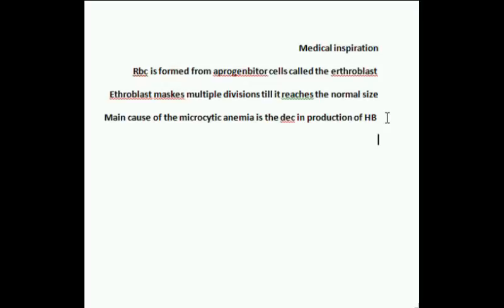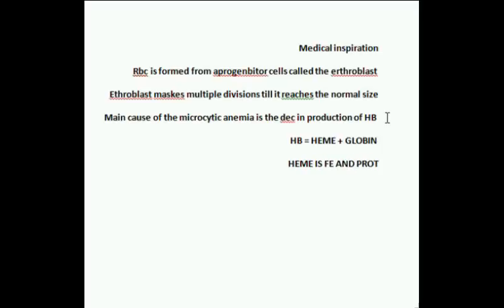What is hemoglobin? Hemoglobin is composed of heme and globin. Heme is composed of iron (Fe) and protoporphyrin. So to produce microcytic anemia, we can face a deficiency in iron, a deficiency in protoporphyrin, or a deficiency in globin.